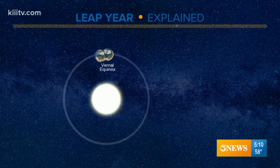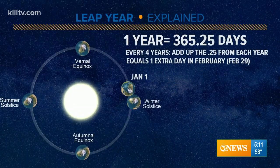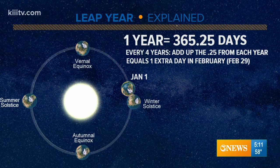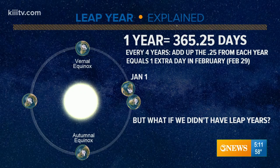Leap Year explained, as said in the package or the video. One year does not equal exactly 365 days — it's actually 365.24. I rounded it up to .25 to make things a little easier. So that extra day every four years, we just add it to February 29th, and that equals the extra day we start to see.